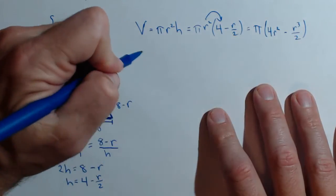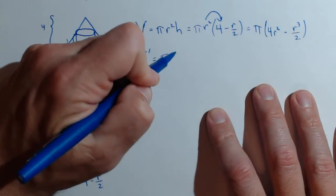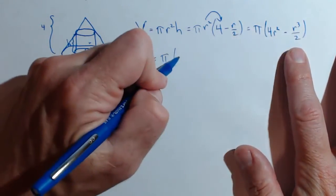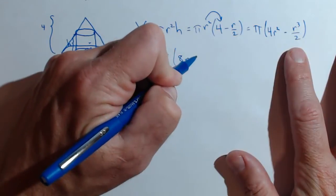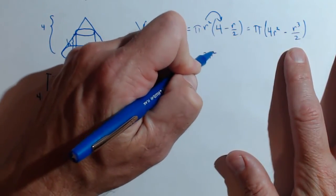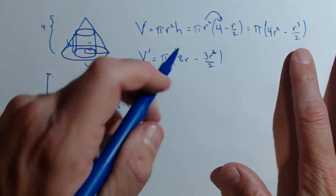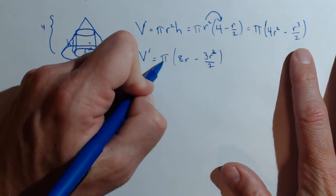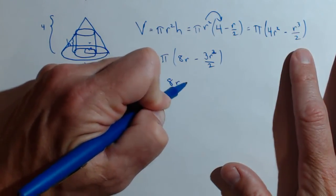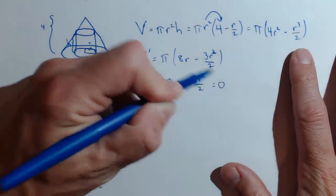Now let's take our derivative. V prime is π times 8r minus 3r squared over 2. We find our critical points by setting this equal to zero — we don't have to worry about any critical points coming from the π. So: 8r minus 3r squared over 2 equals zero.